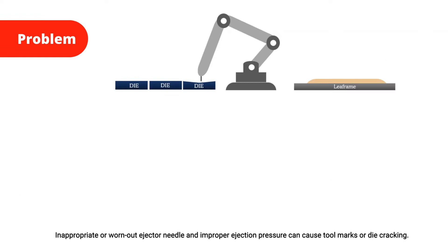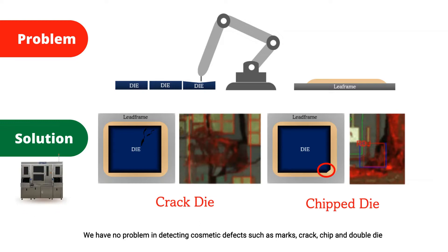Inappropriate or worn-out ejector needles and improper ejection pressure can cause tool marks or die cracking. We can detect the cosmetic defects caused by it, such as marks, cracks, chips, and double die.